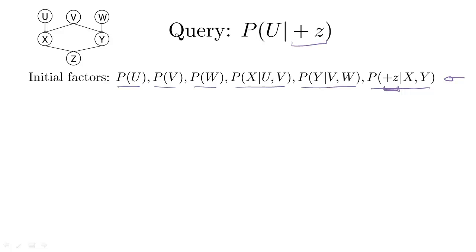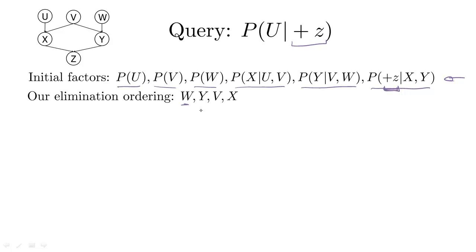When we do variable elimination, we have a choice of ordering in which we eliminate the hidden variables. We'll use this ordering: we'll first eliminate W, then Y, then V, then X.